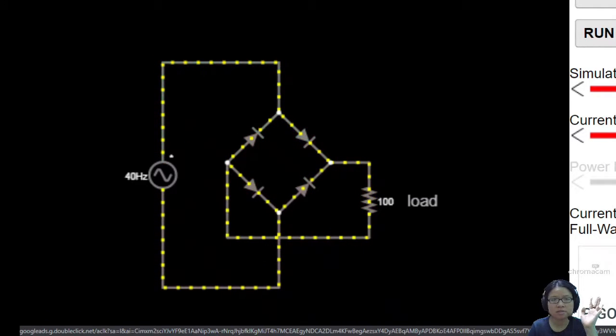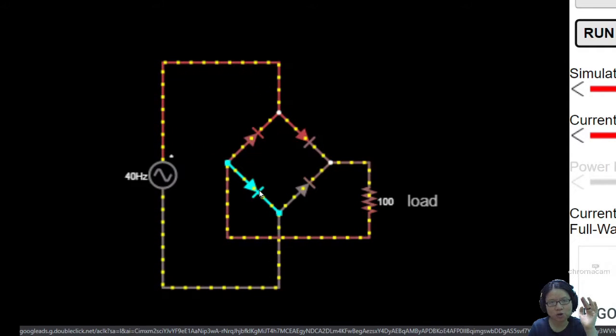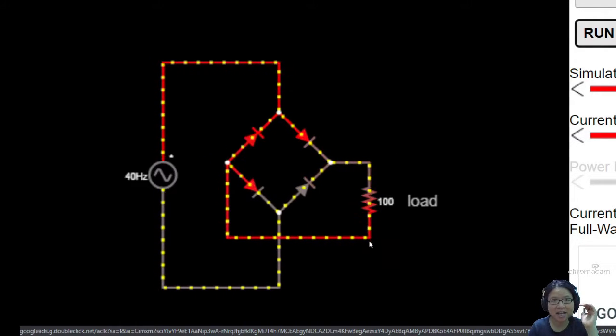So you see, certain cycles, let's say here, the current—let me run again—the current will only flow through either these two diodes or these two diodes. And regardless of which direction the current flows through this load, you will have the direction of current flowing in the same direction.